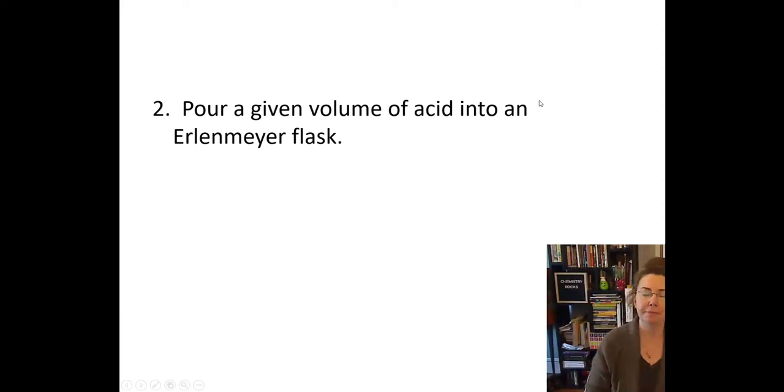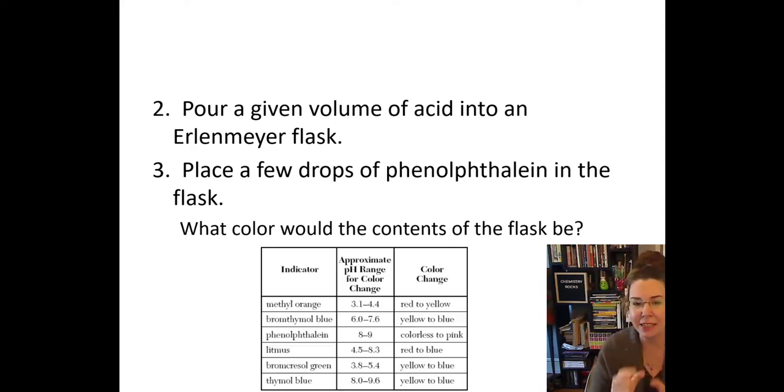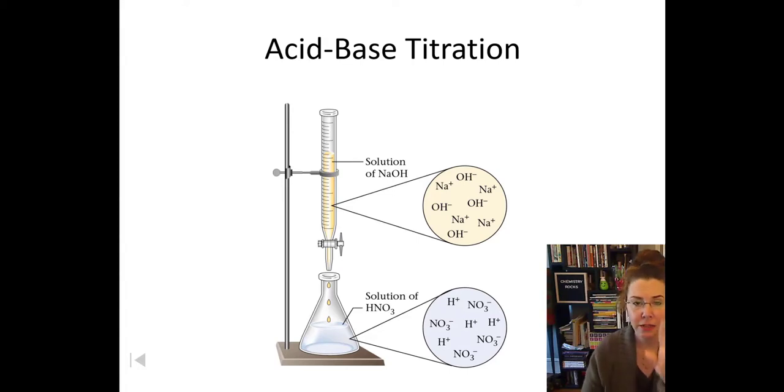Okay. Now that we know how to read a burette, step two. You're going to pour a given amount of acid into an Erlenmeyer flask. Base in one, acid in the other. We could easily reverse this, but generally this is the procedure we're going to use. So you're going to put a few drops of phenolphthalein into your flask. So let's think about this just for a second. Go get table M and tell me if we have acid in our flask and we put phenolphthalein in the flask, what color will the contents of the flask be? Alrighty. So if you said the contents of that flask would be colorless, you're 100% right. Because it doesn't start to turn pink until we're up around pH a little bit above seven and into eight.